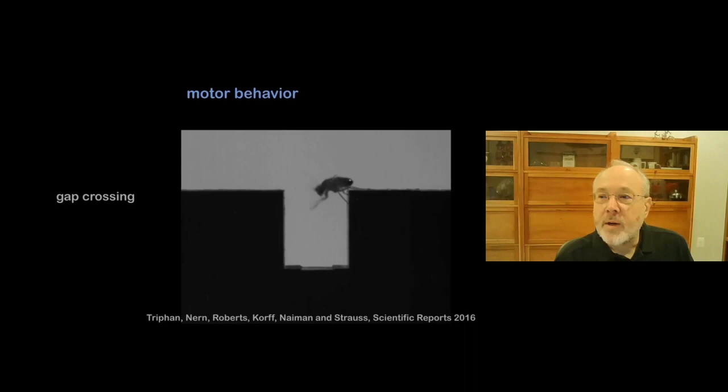I believe that such general principles can be discovered in any animal that has a rich enough repertoire of behaviors. It follows directly from that belief that to discover them efficiently, it would be best to use the most experimentally tractable animal that displays complex behaviors. For me, that animal is the fruit fly.